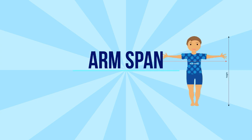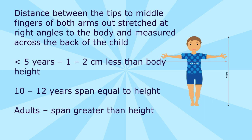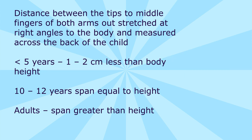Arm Span Measurement: the distance between the tips of the middle fingers of both arms outstretched at right angles to the body, measured across the back of the child. In children less than 5 years, arm span is 1 to 2 cm less than body height. At 10 to 12 years, span equals height. In adults, span is greater than height.